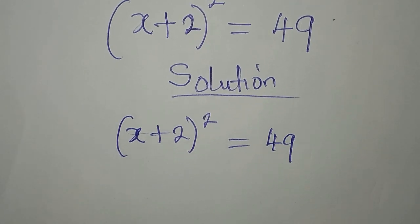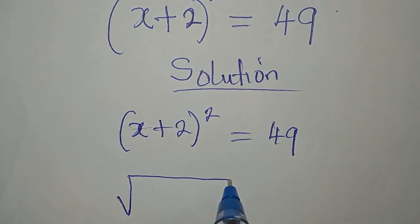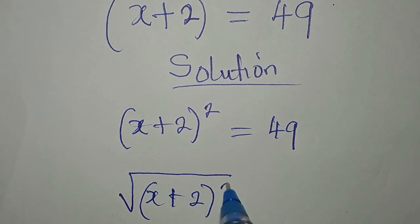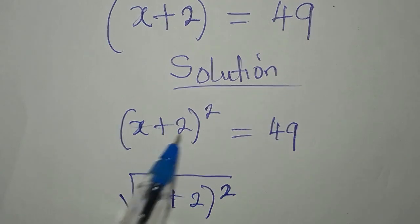The first step is to take the square root of both sides. (x + 2)². Now, if you don't want to do it this way, you can expand what you have on the left and then equate it to 49.